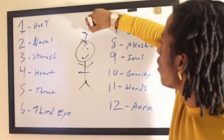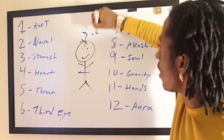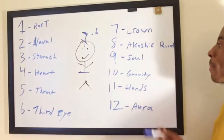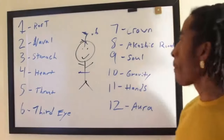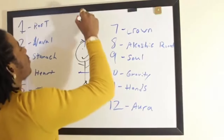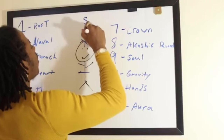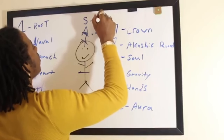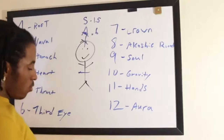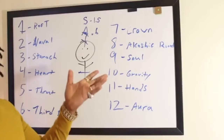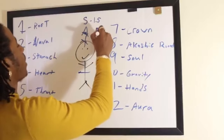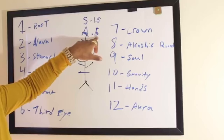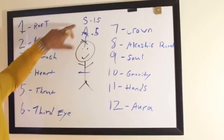The Akashic Records exist about half a foot above the head, so we're going to say 0.5 for Akashic Records. The soul exists about a foot and a half above the head. We're going to put A for Akashic Records and S for soul — A at 0.5, S at 1.5. 1 is for foot, 0.5 is a half, so A is Akashic Records and S is soul.